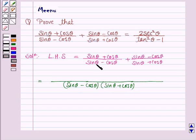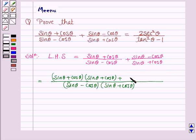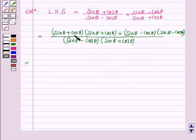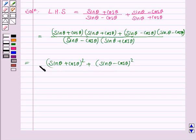In the numerator we have (sin θ + cos θ) multiplied by (sin θ + cos θ), that is we are multiplying (sin θ + cos θ) by itself. Similarly, (sin θ - cos θ) multiplied by (sin θ - cos θ). This gives us (sin θ + cos θ)² + (sin θ - cos θ)² upon (sin θ - cos θ)(sin θ + cos θ).